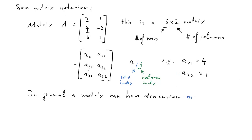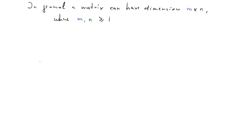Of course, in general, a matrix can have any sort of dimension, m by n, m number of rows, n number of columns. All we need is that both m and n are larger or equal than 1. So it can't be 0 or can't be negative, and they are natural numbers.